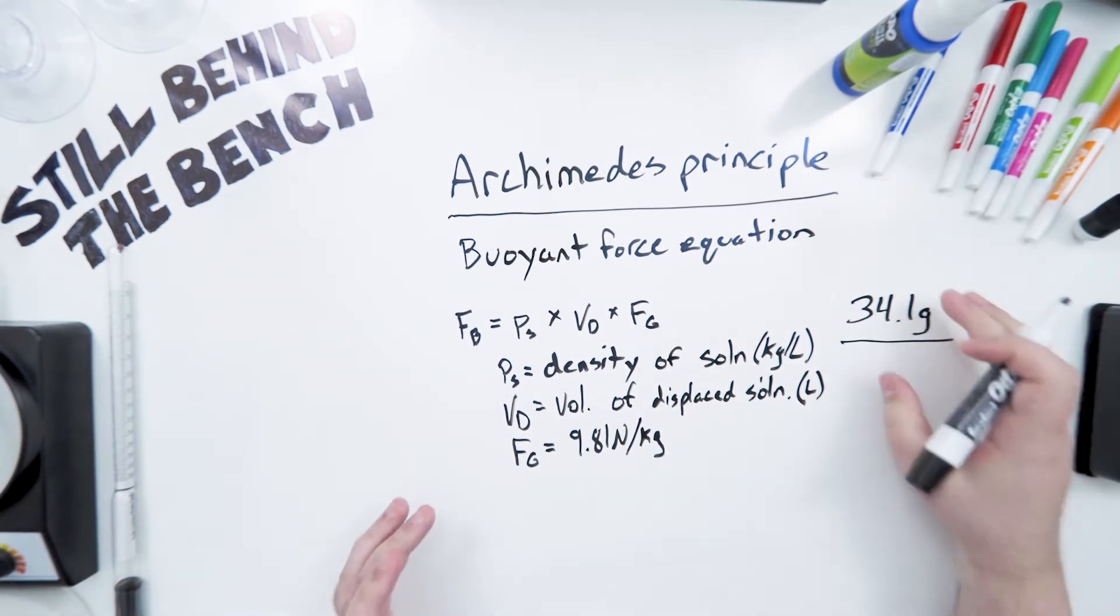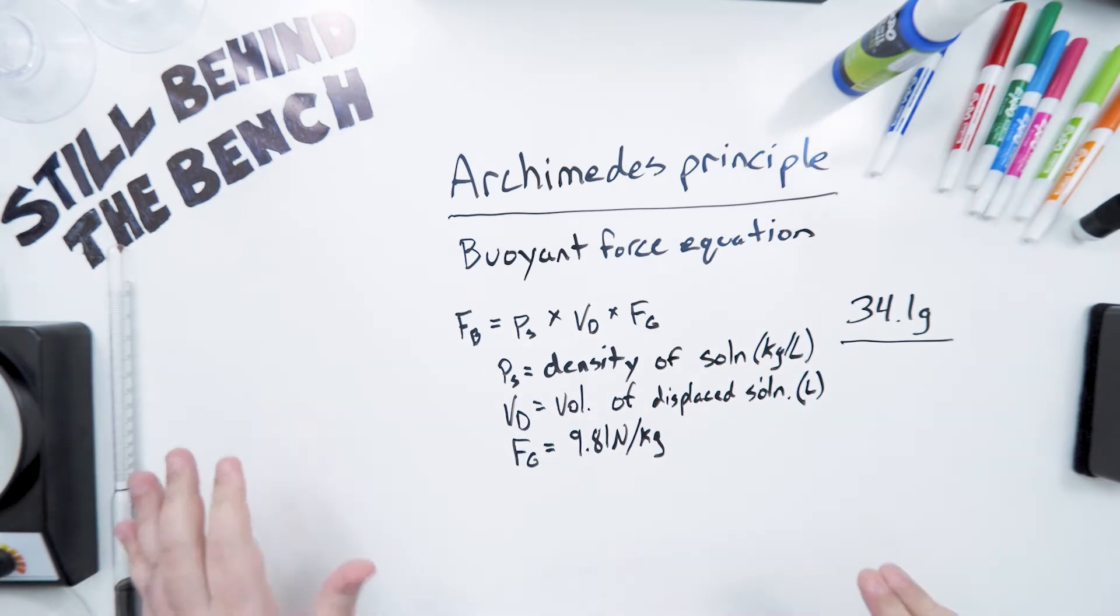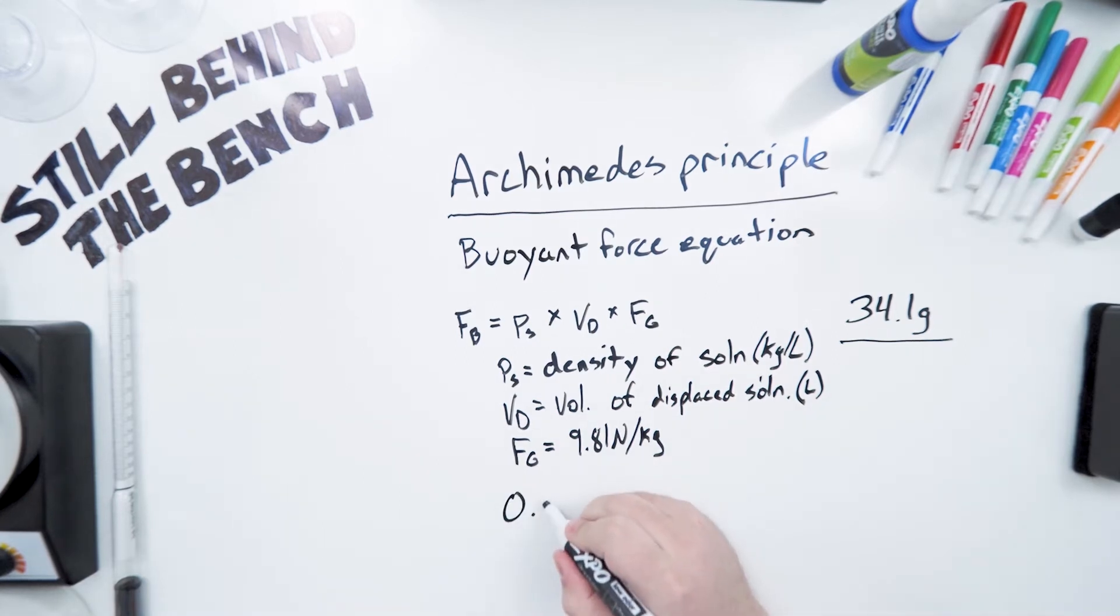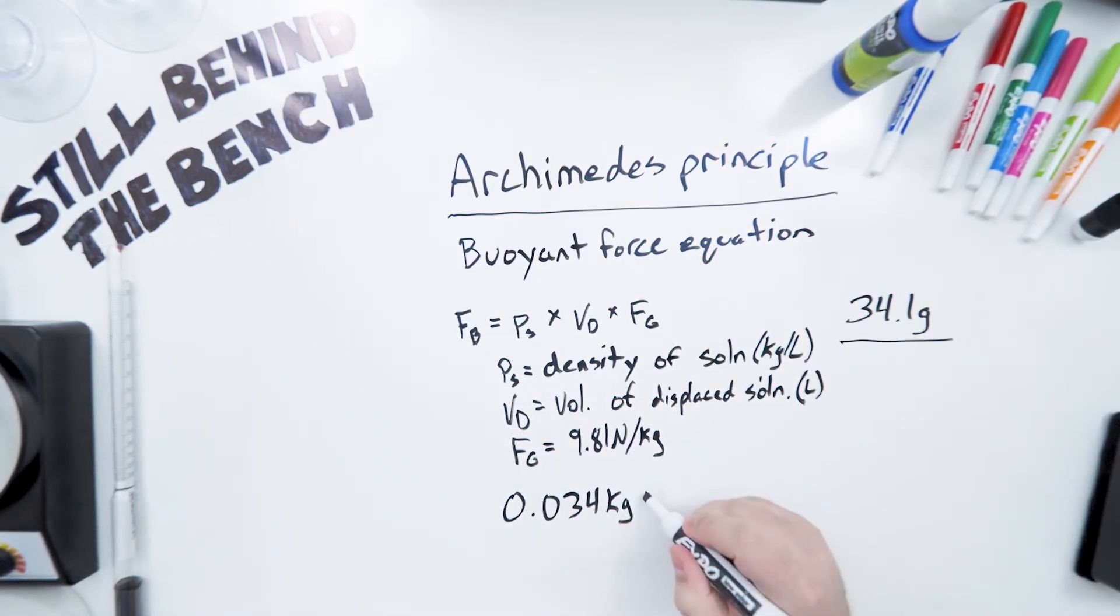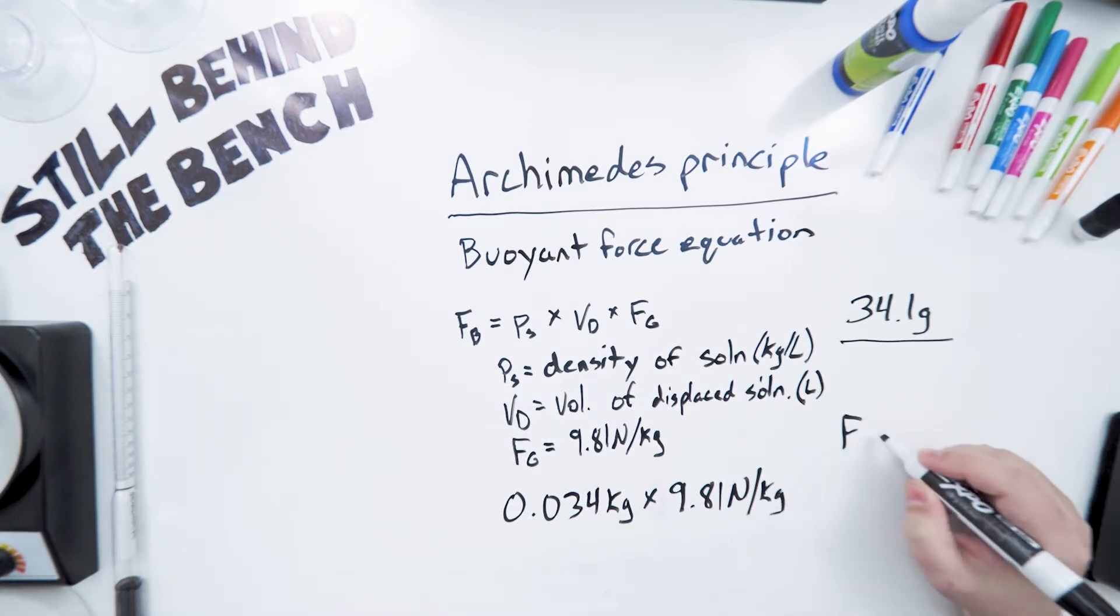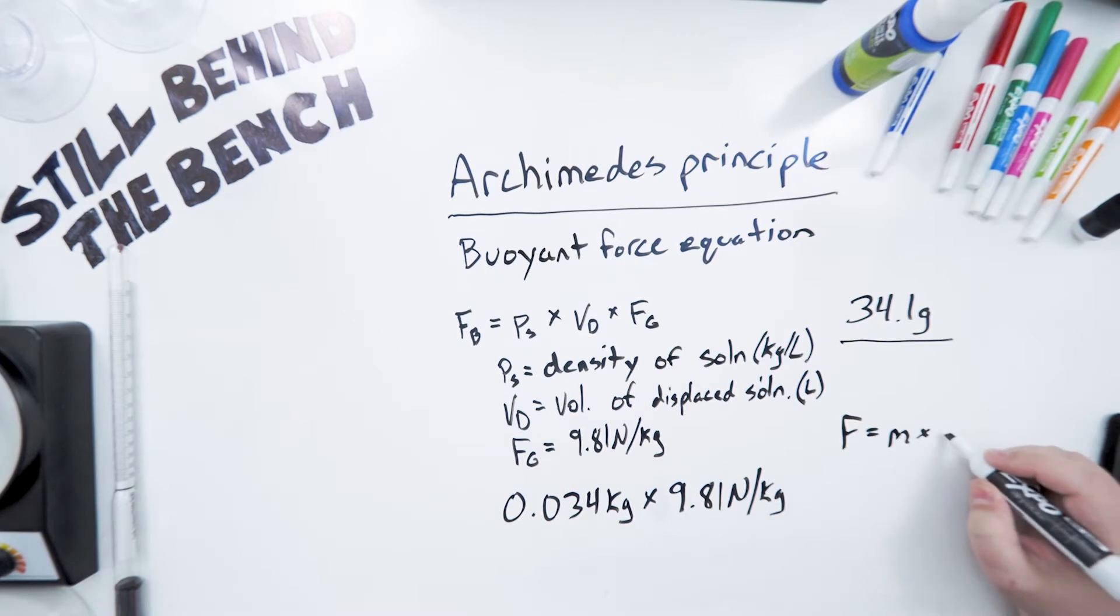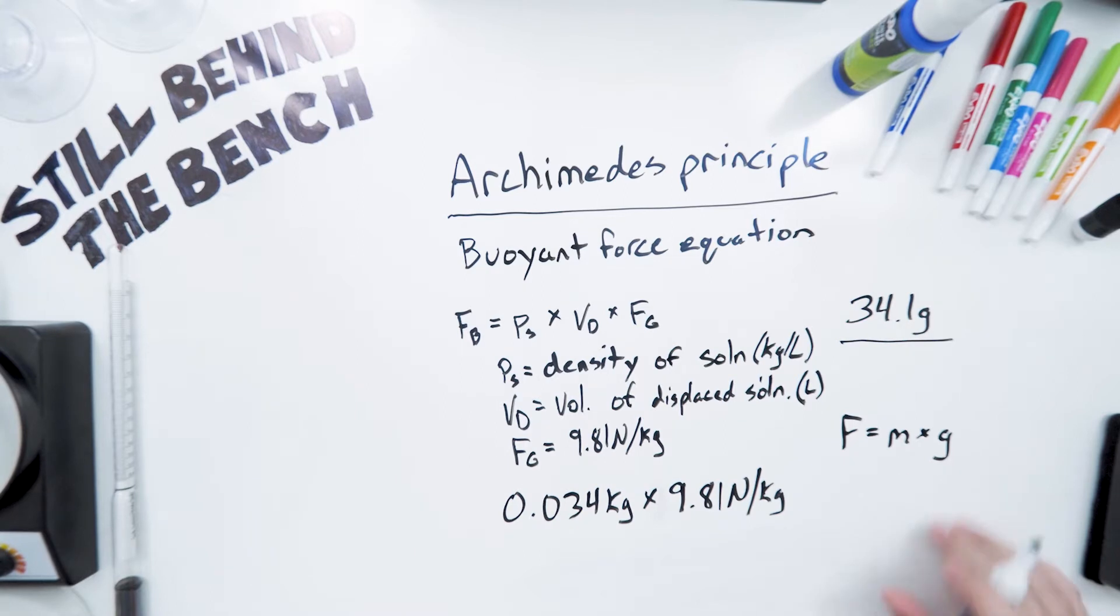All right, so using the mass of the hydrometer, 34 grams as an example, we'll calculate the downward force due to gravity on the hydrometer. So in kilograms, that's actually 0.034 kilograms. I should write out the formula so you know what I'm doing here. It's force equals mass times the force of gravity. You've probably seen this formula before. It's probably one of the first ones you learn in any physics class. So yeah, mass times the force of gravity gives us 0.3335 newtons.